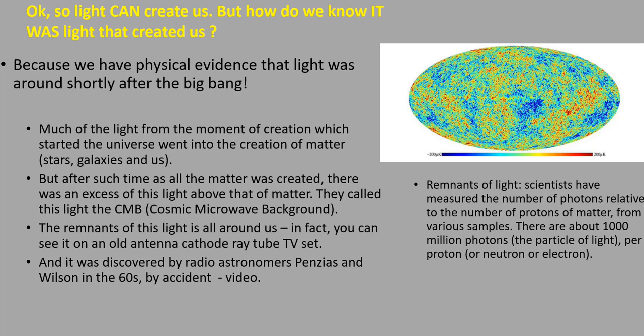But after such time as all the matter was created, there was an excess of this light above that of matter. They called this light the CMB, Cosmic Microwave Background. The remnants of this light is all around us. In fact, you can see it on an old antenna cathode ray TV set. And it was discovered by radio astronomers Penzias and Wilson in the 60s by accident.